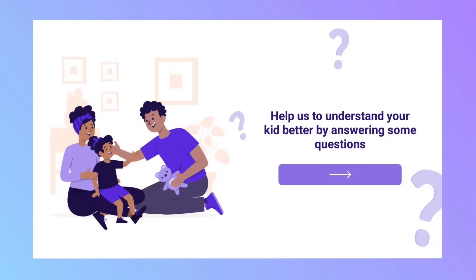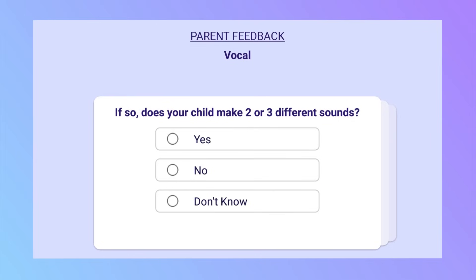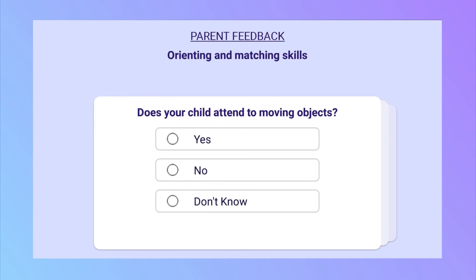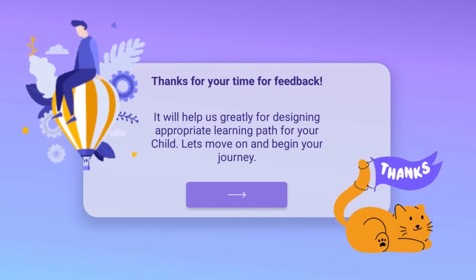After answering these questions, you will be asked to complete a parent feedback form on which you will be asked about your child's current skill set. The parent feedback will help create an individualized program for your child.